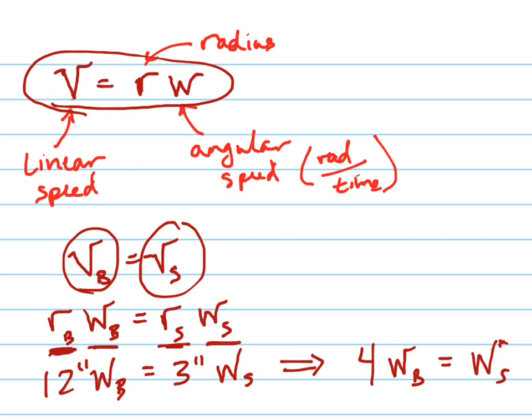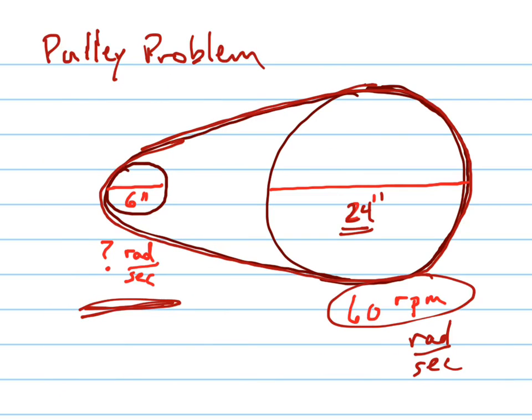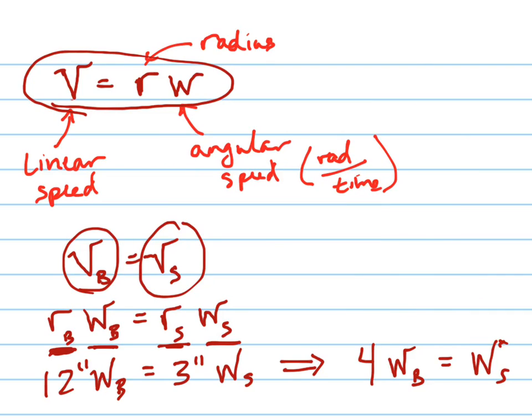And that makes sense if you think about what's happening here. The angular speed, this thing is going to be going a lot slower. The angular speed of the bigger wheel is a lot slower than the small wheel. The small wheel is just going to be flying. As the big wheel goes one revolution, it's going to do a lot more. And so that's the relationship right there. 4 times the angular speed of the big wheel equals the angular speed of the small wheel.